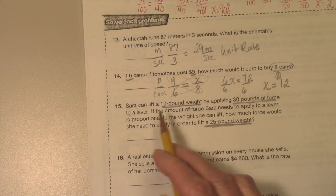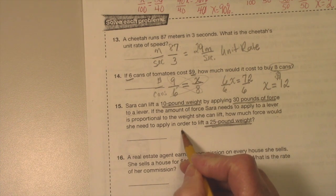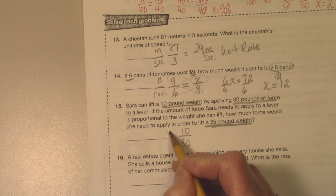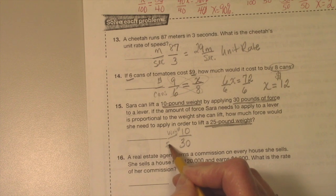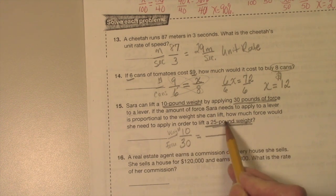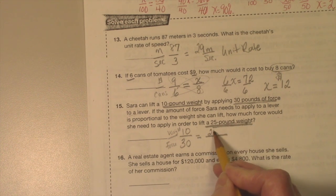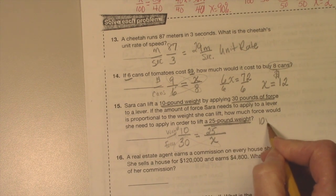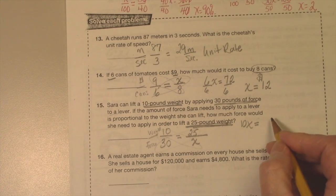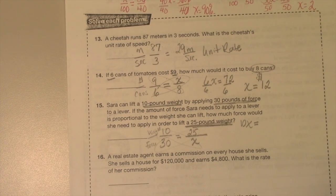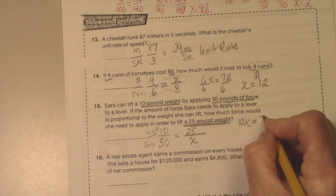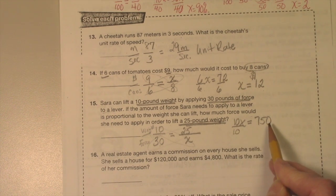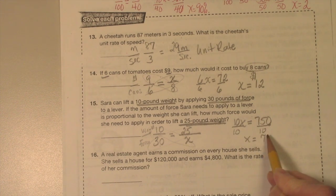I'm going to say she can lift 10 pounds when she applies 30 pounds of force. I'm just going to go 10 over 30. So this is the weight and this is the force, equals 25-pound weight she wants to lift. How much force? That you're missing. Butterfly. So I get 10x equals 30 times 25 is 750. You follow me? 30 times 25 is 750. Divide by 10, divide by 10, and x equals 75. So she needs 75 pounds of force to lift a 25-pound weight.